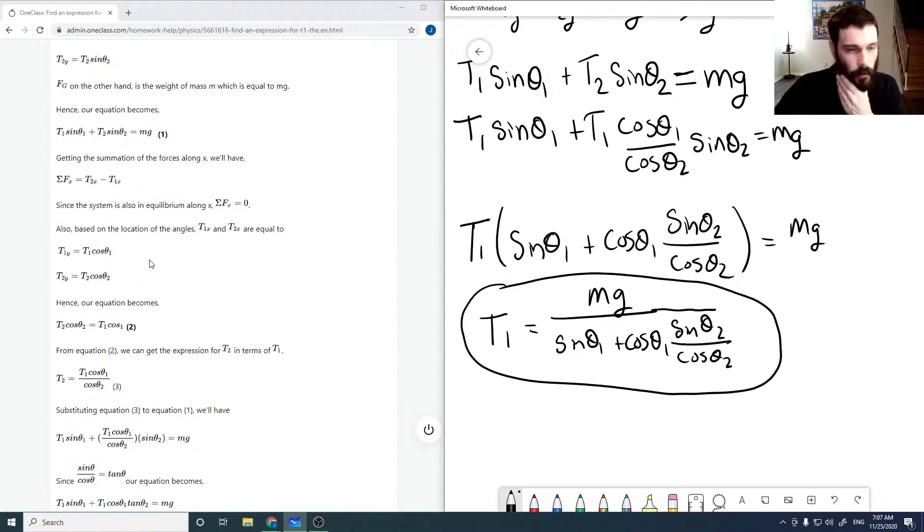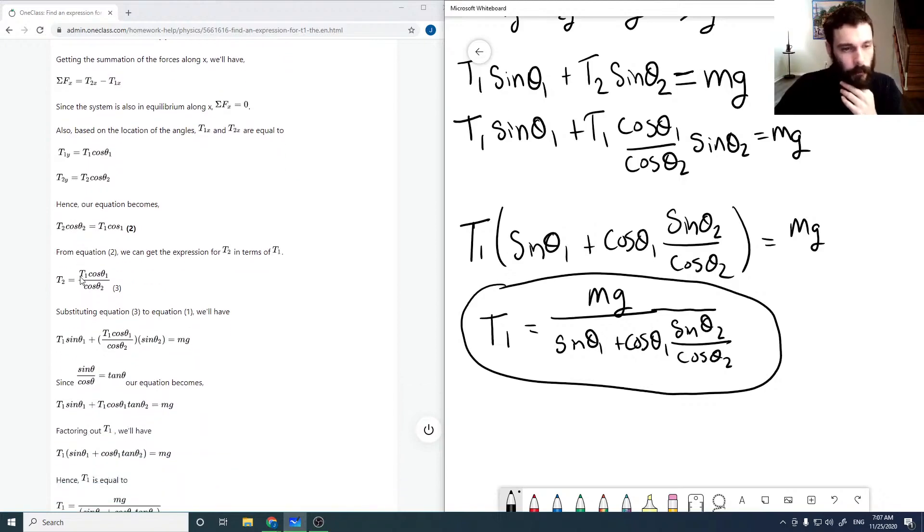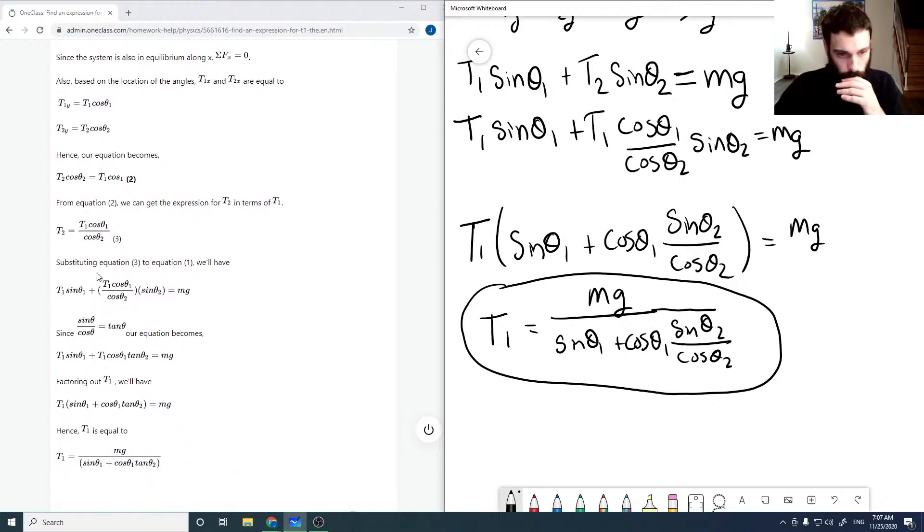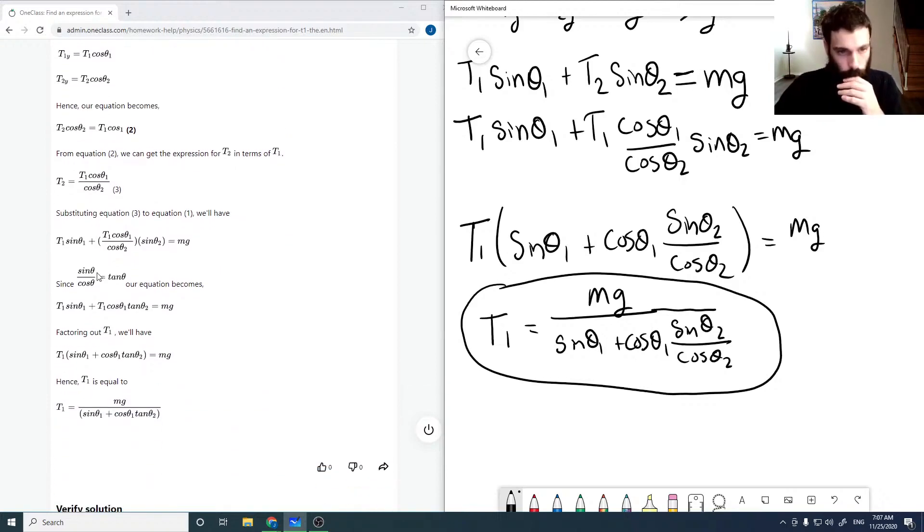And these should be x's not y's here, but that's a minor error. And so they have to be equal, which is what we found, so you can solve for T2. And then the only thing that they did differently is you can call that tan theta 2 just to simplify things a little bit more.